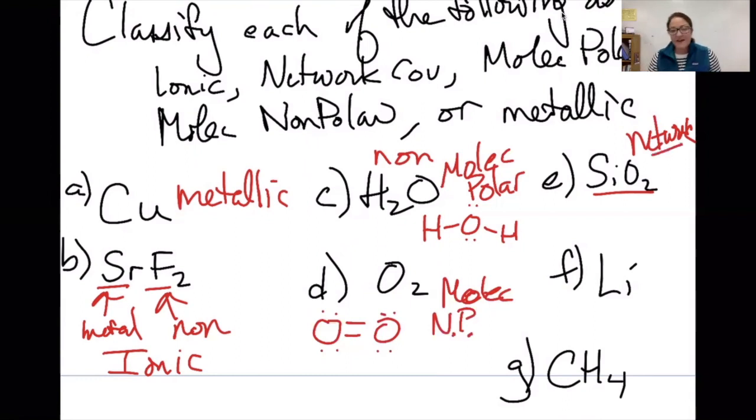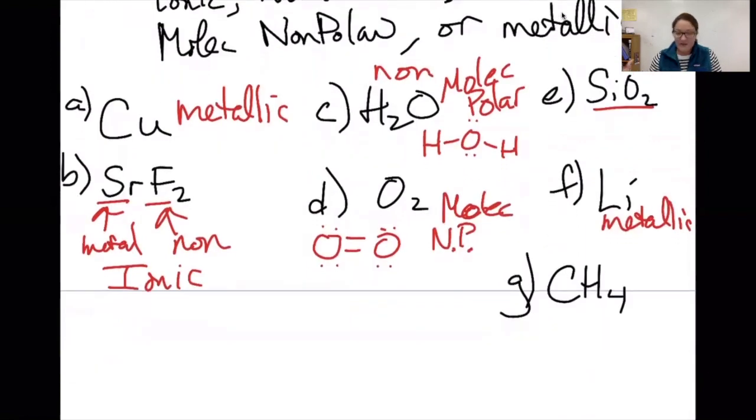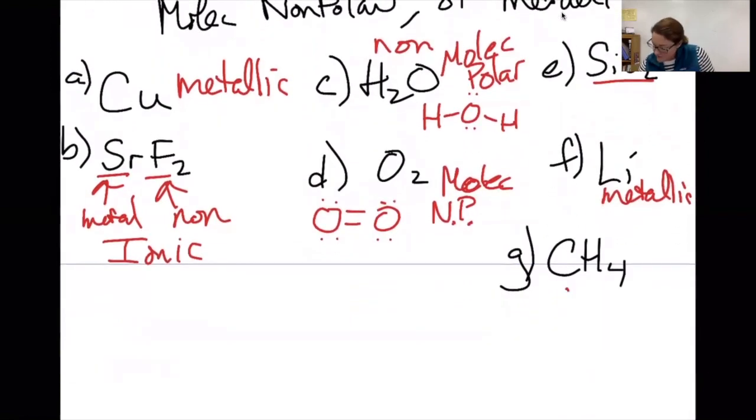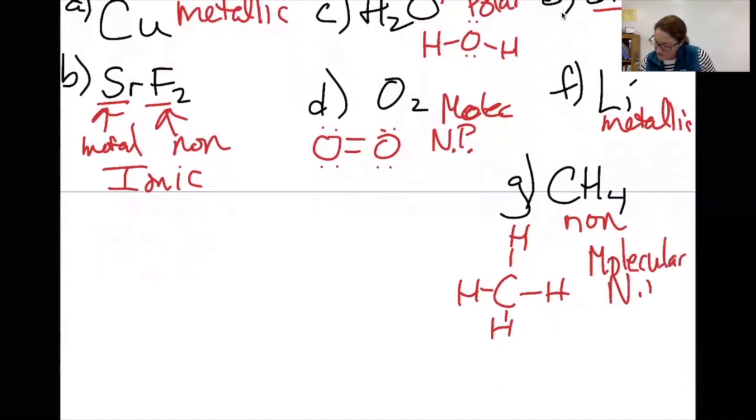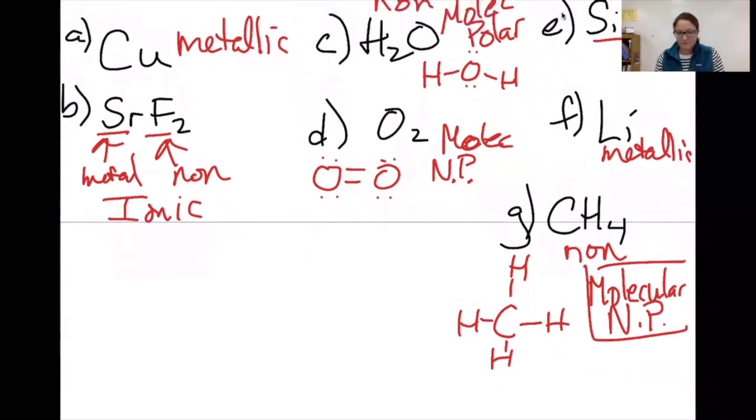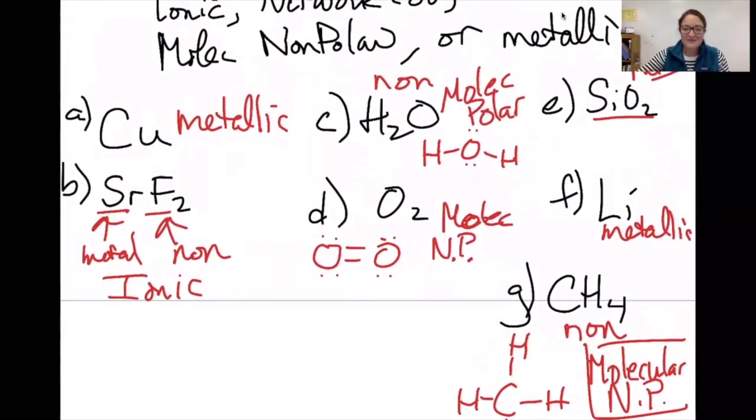E, we already identified as network. F, finding lithium on the periodic table, you'll find that it's in the first column, which makes it a metal. And it's not bonded to anything, so it's just going to be a metallic solid. CH4, I'm seeing nonmetals again. So I'm going to draw the Lewis structure. The Lewis structure for CH4 looks like that. So my classification is going to be molecular nonpolar. We have some practice for you to try.